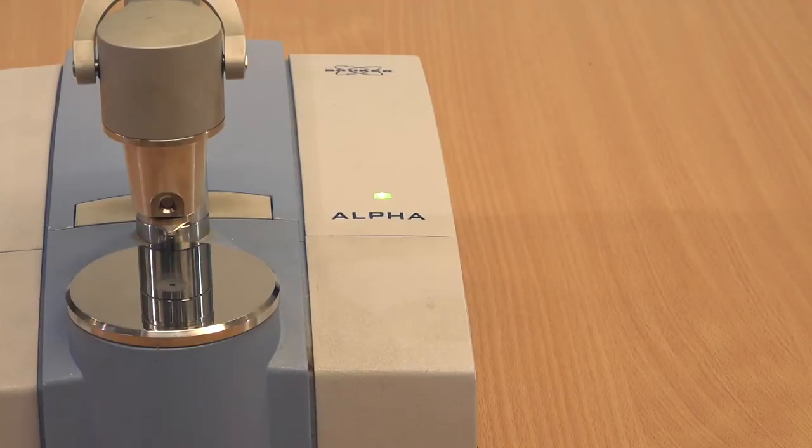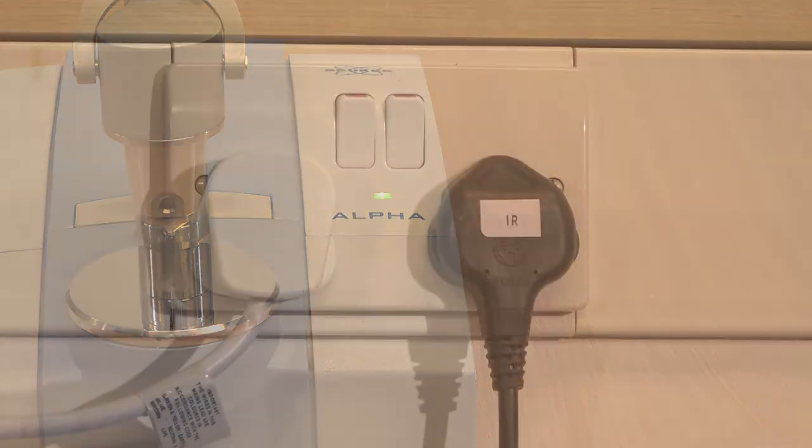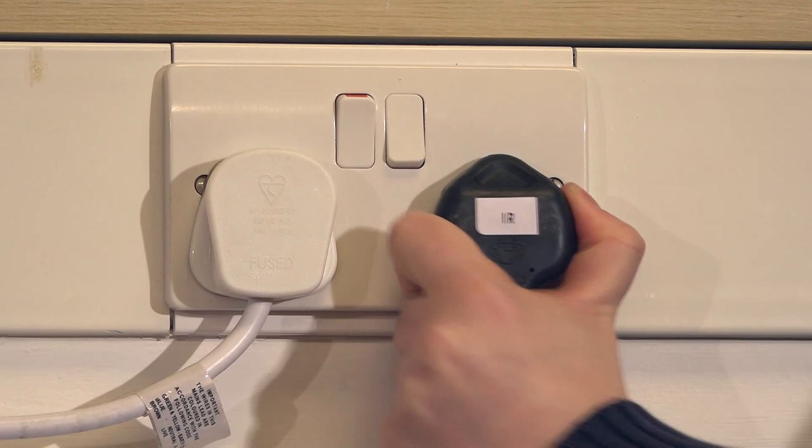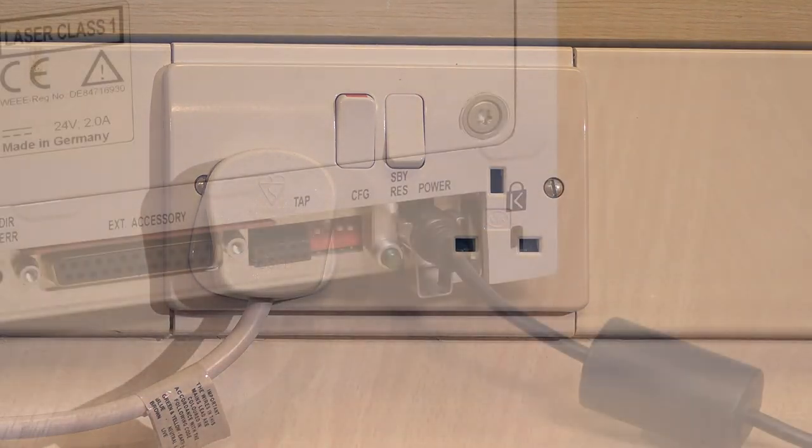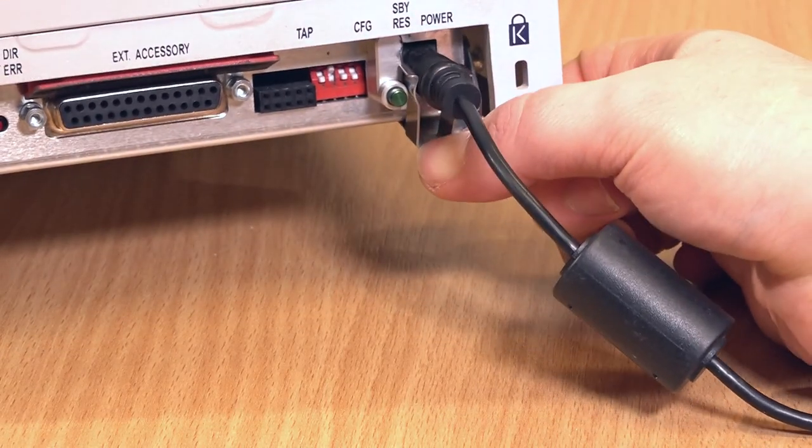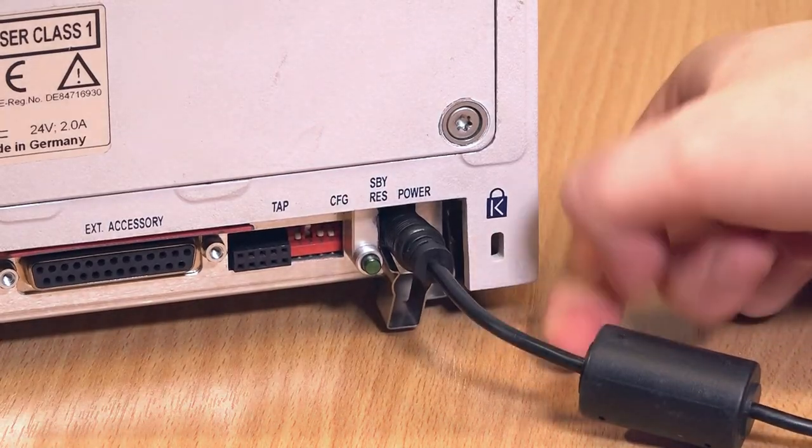If you have another class later on, leave the IR unit plugged in and switched on. Otherwise, switch off the IR spectrometer at the wall socket and disconnect the power supply. Remember to remove the metal clip from the power cable before you take the plug out of the spectrometer. Also, disconnect the ethernet cable from the spectrometer and the laptop.